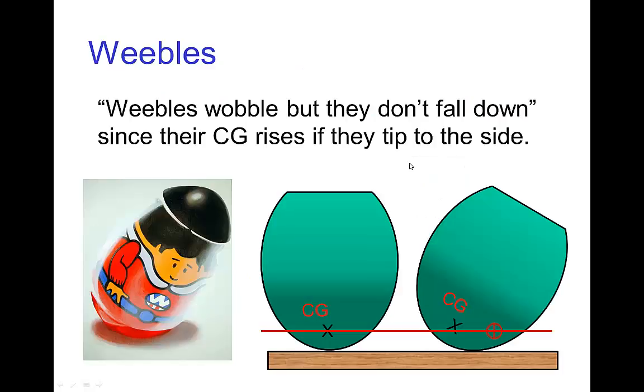Weebles are a child's toy and the slogan goes 'Weebles wobble but they don't fall down.' They don't fall down because they are weighted such that the center of gravity for a Weeble is very low. So if a Weeble was to tip over, that would actually have to cause the center of gravity to go up, and so they're very stable in the lower upright position.